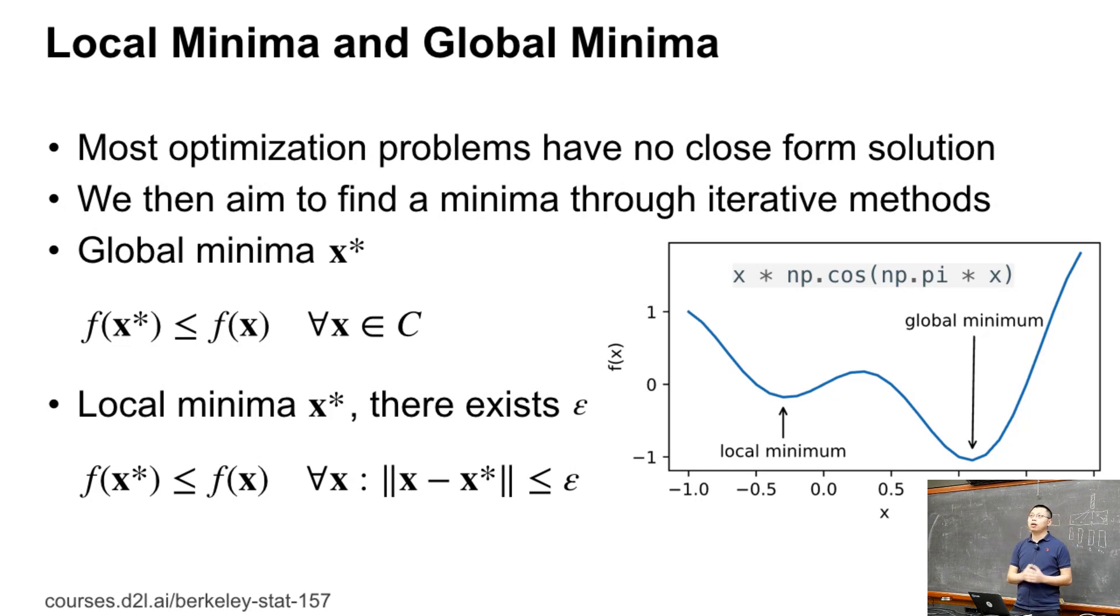There are two kinds of minima. One is called a global minima. For global minima x*, any value x in C should be greater than or equal to f(x*). A local minima x*: there exists an epsilon such that for any x in C, the distance between x and x* is less than epsilon, and for such x, we all have f(x*) less than or equal to f(x). Here's a figure with a global minima and a local minima. The local minima is only a minima for the epsilon, not for larger values.